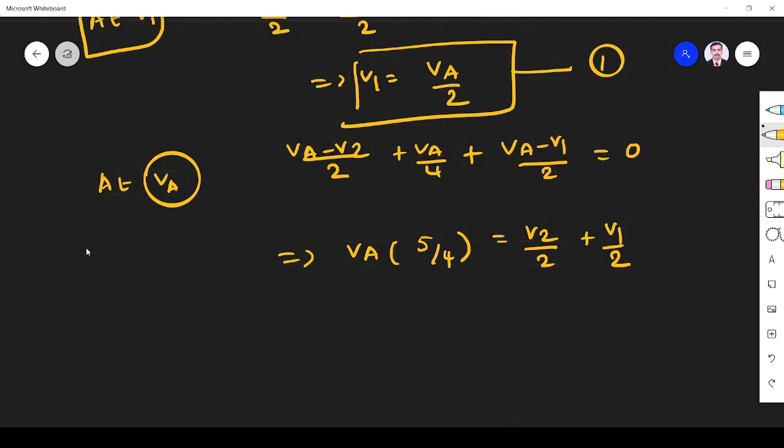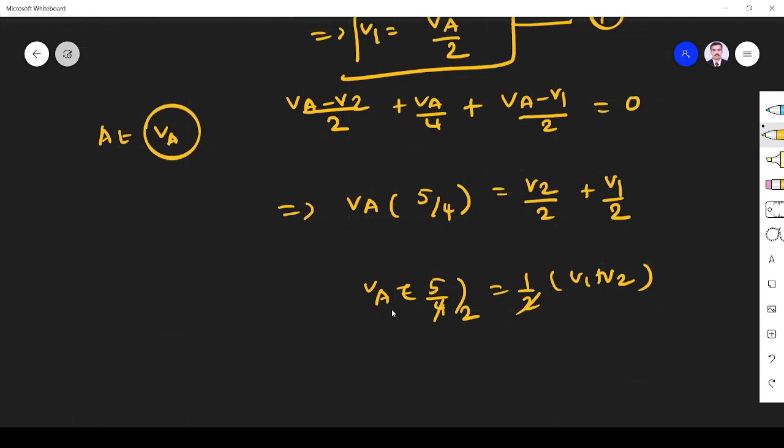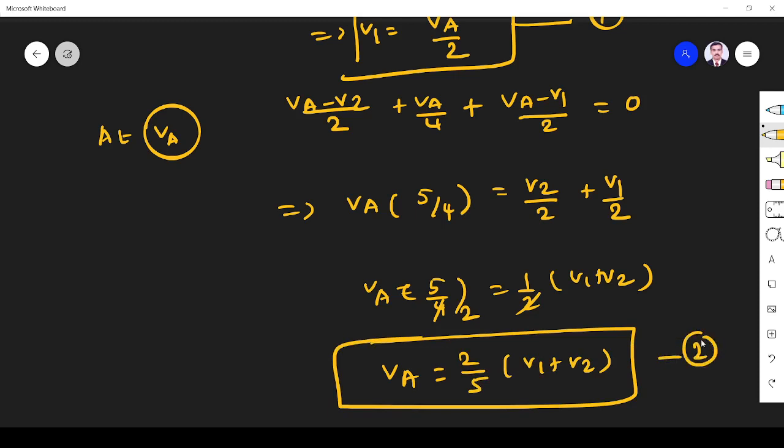So what will happen if you simplify? Va times 5 by 4 equals 1 by 2 times v1 plus v2, so it is 2. So va is equal to 2 by 5 times v1 plus v2. This is equation number 2.